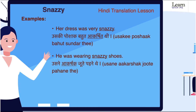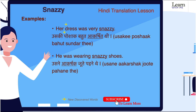Now let us understand through examples. Her dress was very snazzy — uski paushak bhoat akarshit thi. He was wearing snazzy shoes — usne akarshak jute pahne the.